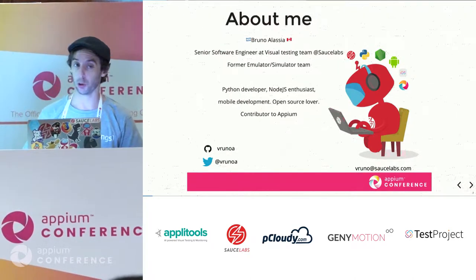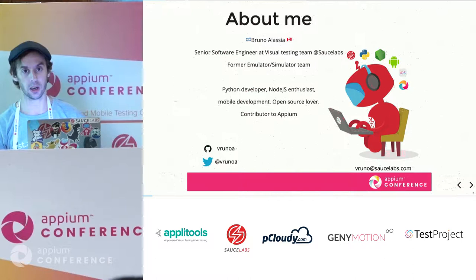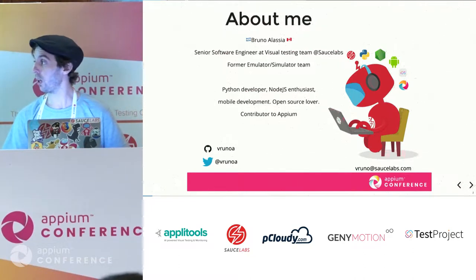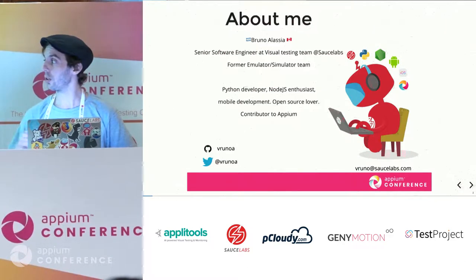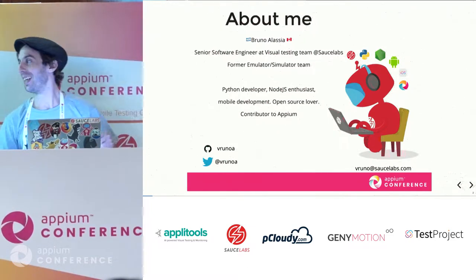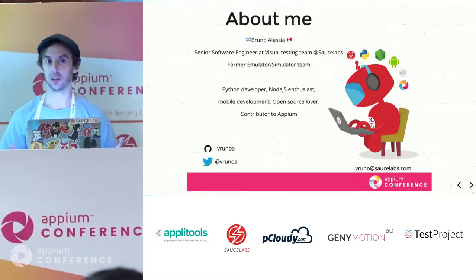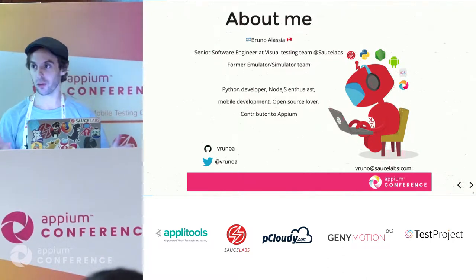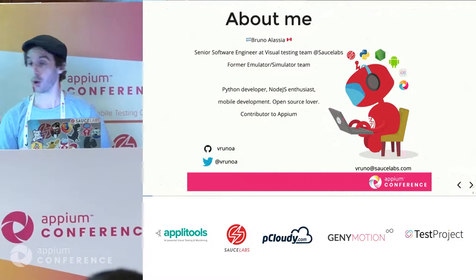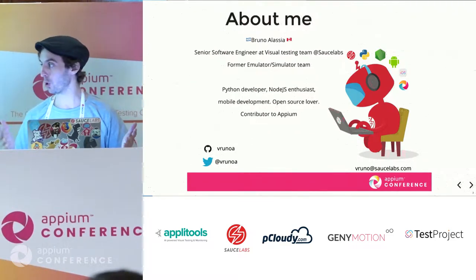Right now I'm actually working on the visual testing team, but that was just recently — just last month. Before that I was working on the emulator simulator team. I'm a Python developer mostly, and I also do Node.js — I really like Node.js. Before that I used to do mobile development: iOS, Android, Java, hybrid apps, some of them with JavaScript. I really like open source, which is why I got engaged with Appium. I'm a contributor to Appium, and what I contribute to is actually what I'm going to talk about today.